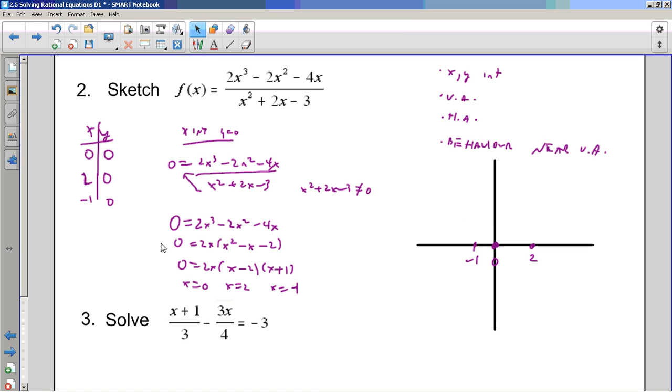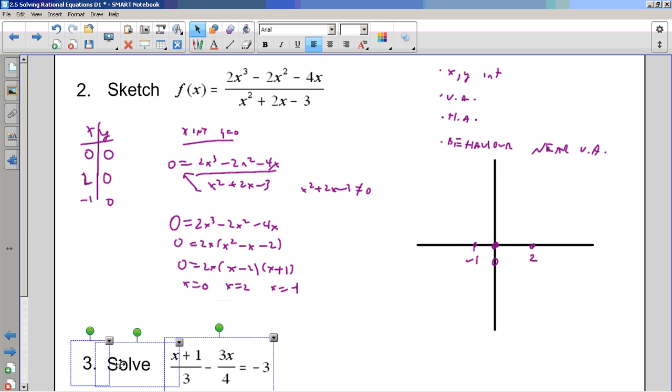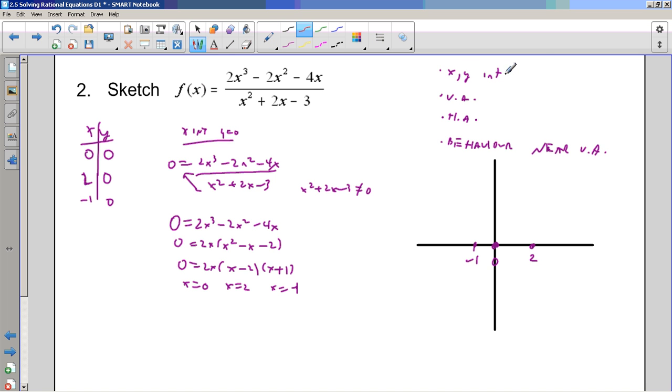2 and minus 1 and 0. Put those on there. There's 0. 2 is here. And negative 1 is there. And next is a vertical asymptote. Vertical asymptotes occur when the bottom is equal to 0. x squared plus 2x equals 0. I'll factor it. x plus 3, x minus 1. x equals minus 3, x equals 1. A vertical asymptote. So at minus 3, I'm going to have a vertical asymptote. At x equals 1, I'm going to have a vertical asymptote.